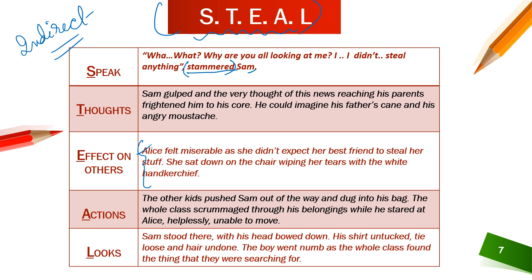For L — Looks: 'Sam stood there with his head bowed down, his shirt untucked, tie loose, and hair undone.' You can actually visualize the whole incident. 'The boy went numb as the whole class found what they were searching for.' It is indirect characterization — it shows Sam's character: he's done something wrong, he's repenting, he cares for Alice, and he's scared of his parents. So many aspects come up just because I've descriptively described Sam.